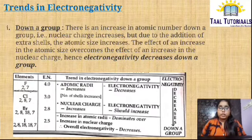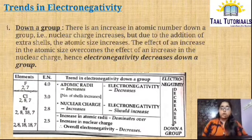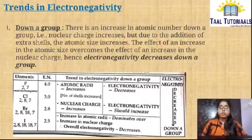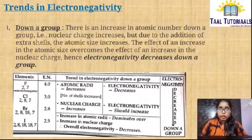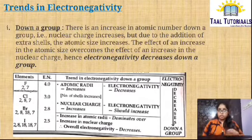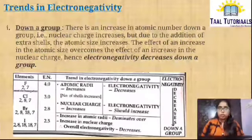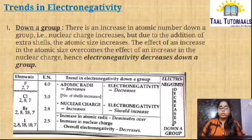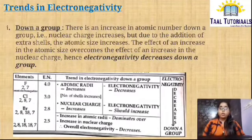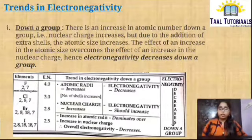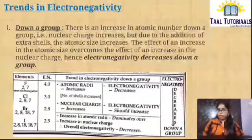Hence electronegativity decreases down a group. In this picture, you can see atomic radius increases and electronegativity decreases — they are opposite. Nuclear charge is increasing so electronegativity should increase, but overall, down a group, electronegativity is decreasing.